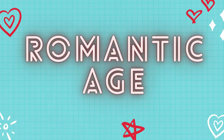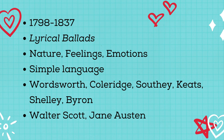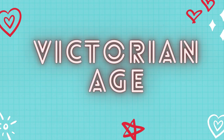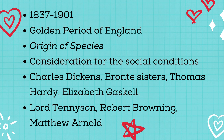Followed by the Augustan Age, we have the Romantic Age, with a timeline from 1798 to 1837. The publication of Lyrical Ballads marked the beginning of the Romantic Age. The Romantic Age supported writings based on nature, feelings, and emotions in simple language. Famous poets in the Romantic Age are Wordsworth, Coleridge, Southey, Keats, Shelley, and Byron. Prominent novelists during the Romantic Age are Walter Scott and Jane Austen.